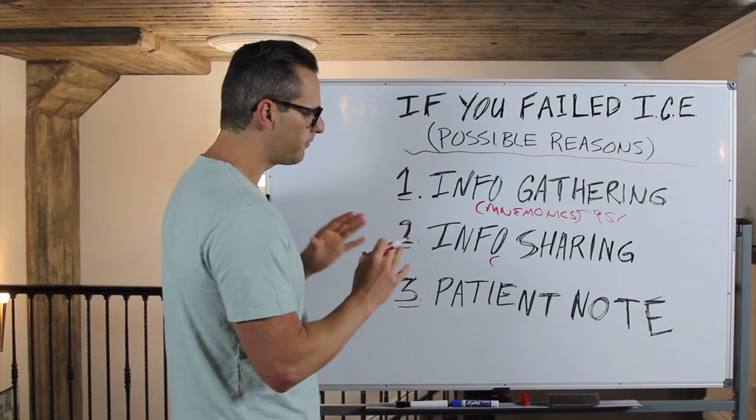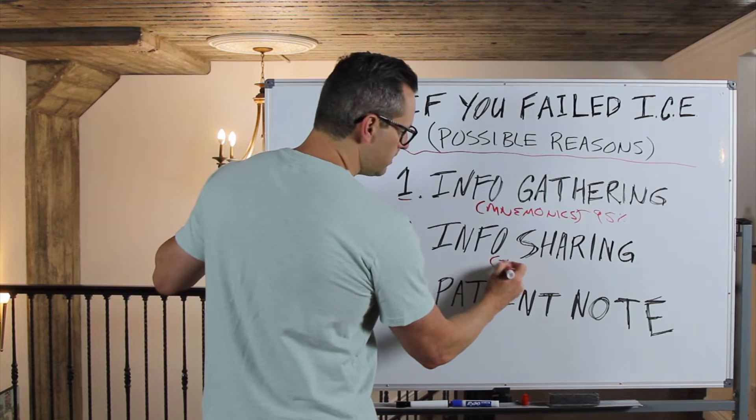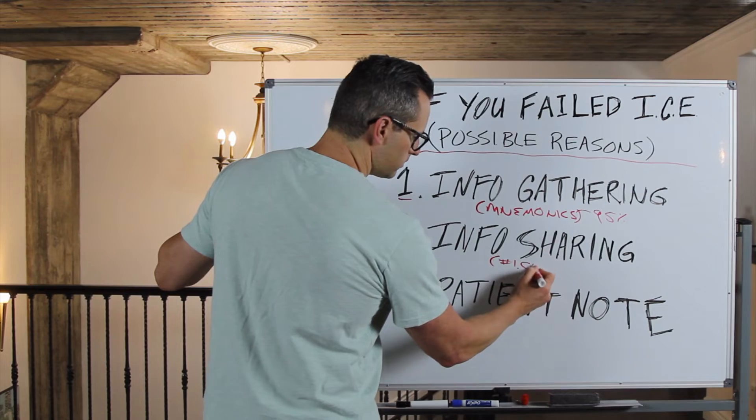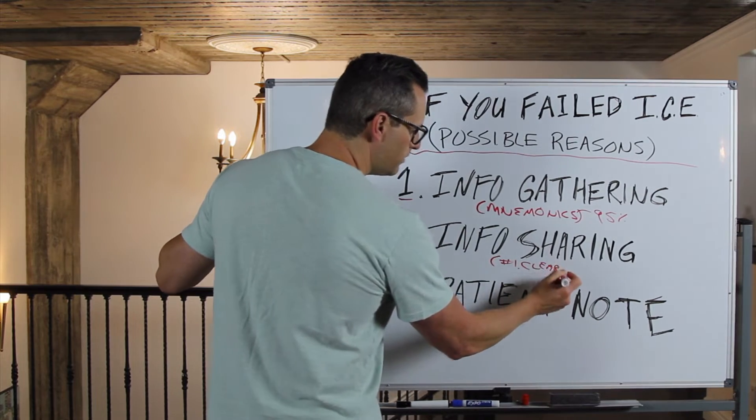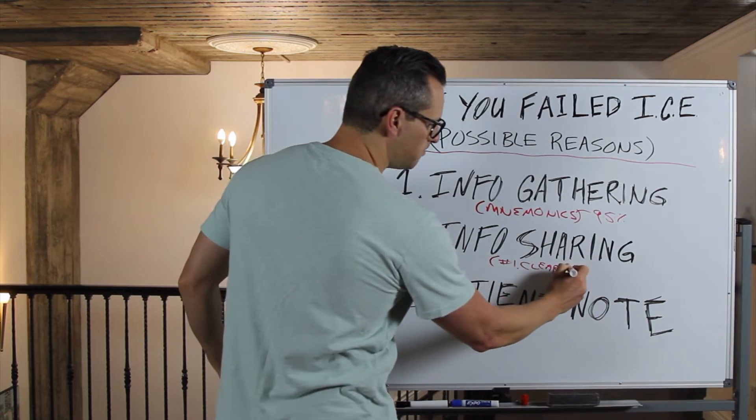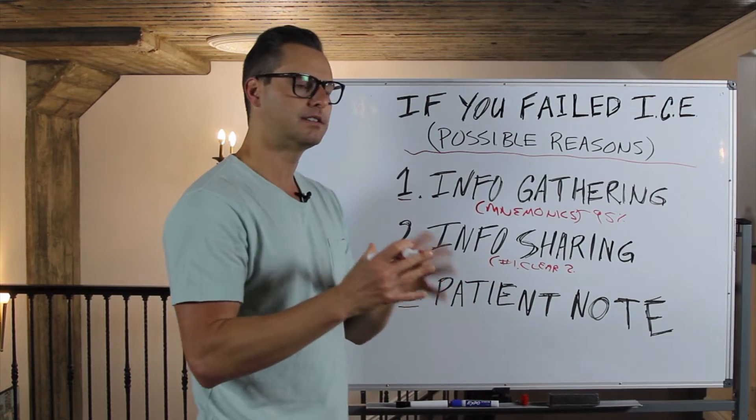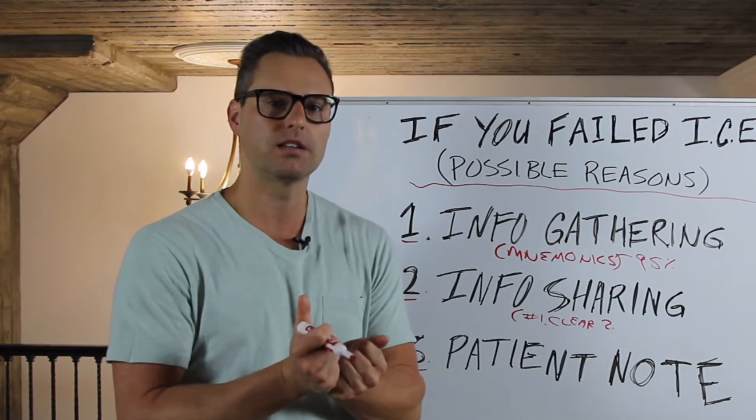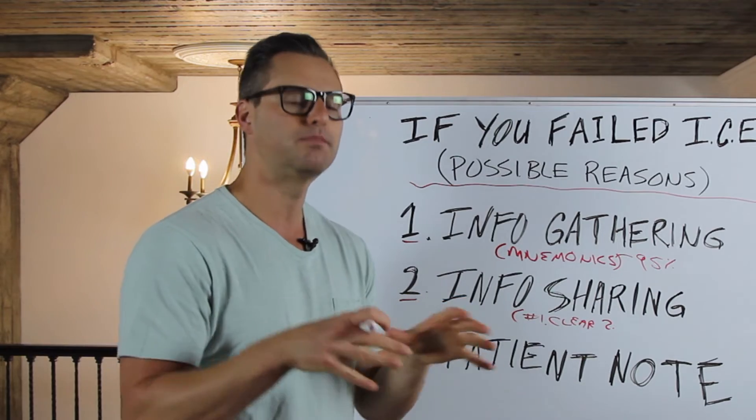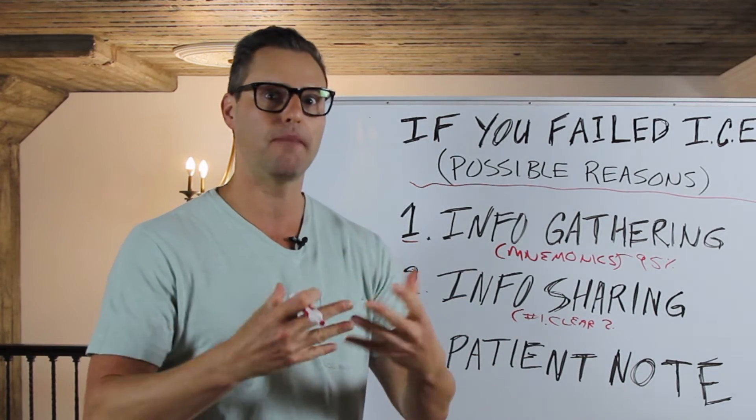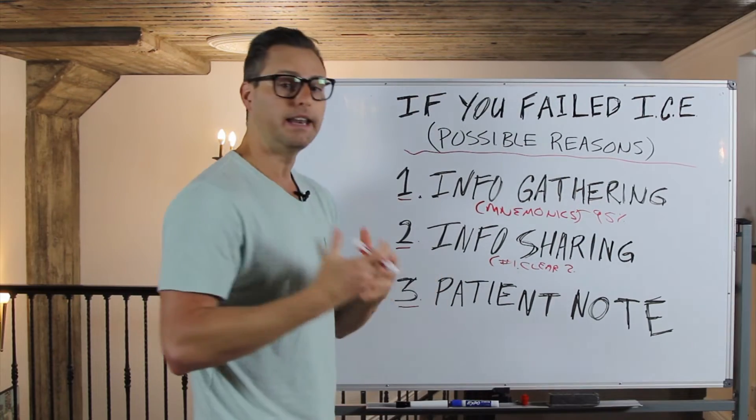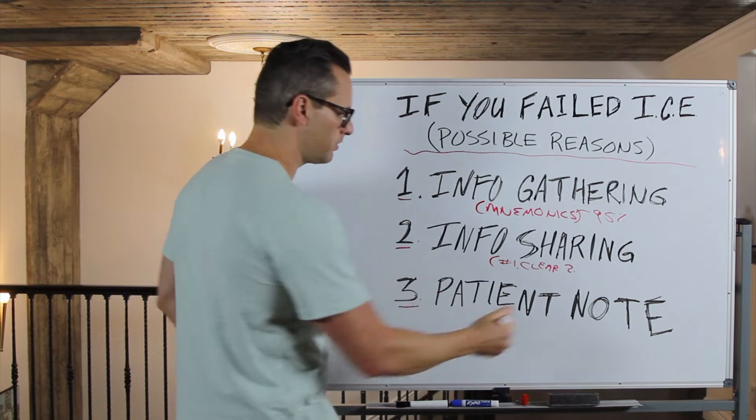So when you share information, number one, you need to make sure that you're clear so that they understand. You need to make sure that you're direct. You don't want to beat around the bush and not really say something. For example, if cancer is a possibility, you don't want to tiptoe around that and have them ask you. You want to say it is a possibility when you're talking differentials.